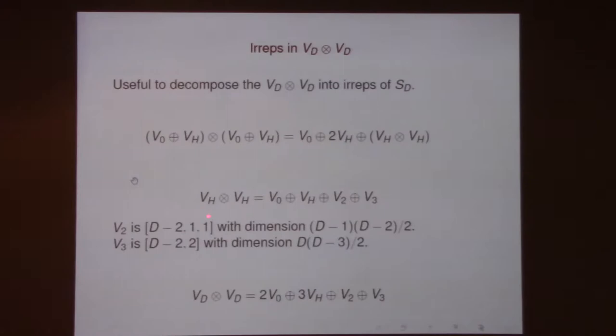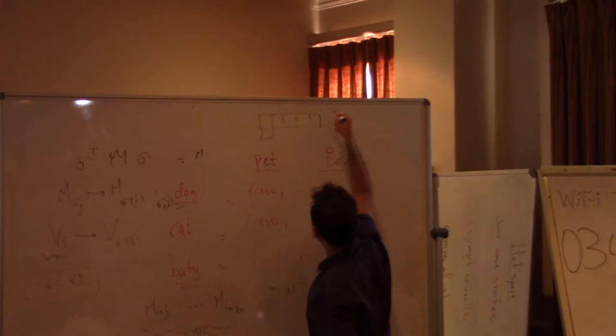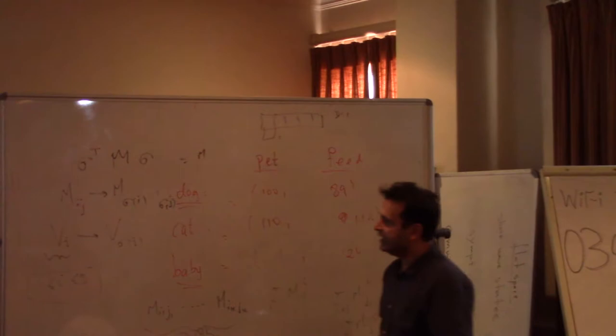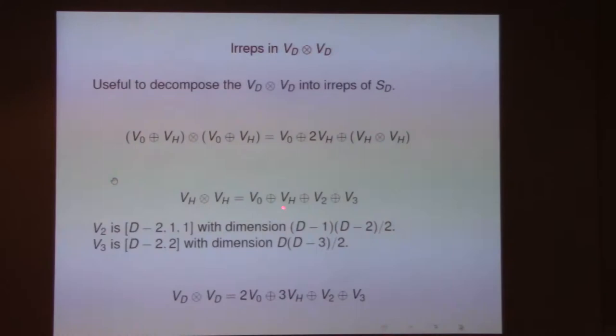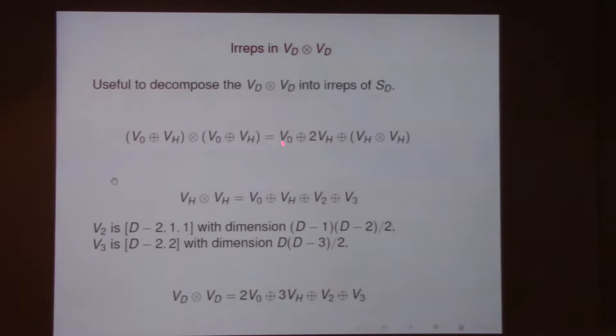When you take V_d⊗V_d, you have (V₀⊕V_H)⊗(V₀⊕V_H). V₀⊗V₀ gives you V₀. V₀⊗V_H gives V_H, and V_H⊗V₀ gives another V_H — so two copies of V_H. And then V_H⊗V_H decomposes further. The hook representation is the (D-1)-dimensional irrep with Young diagram having D-1 in the first row and length one for the second row. Its tensor product with itself gives one copy of the trivial, one copy of V_H, and something else V₂, plus V₃. The decomposition of V_d⊗V_d gives two copies of V₀, three copies of V_H, and one copy each of V₂ and V₃.